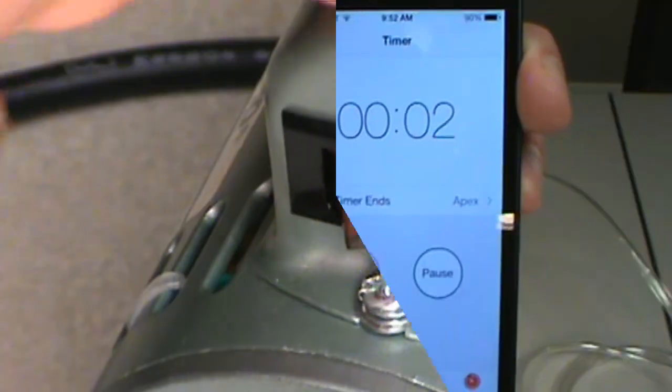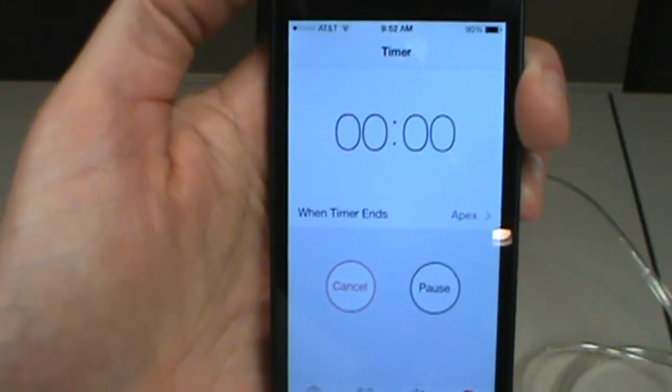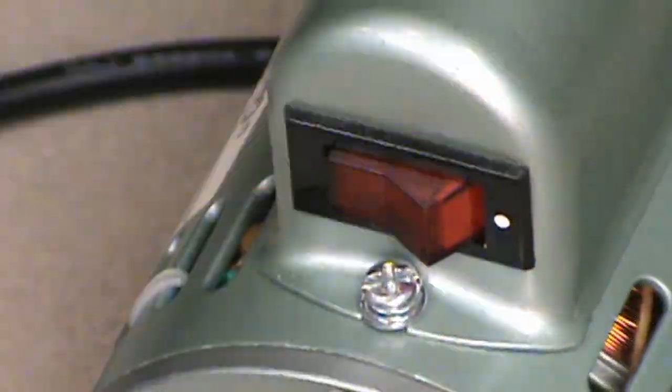Set your timer to two minutes, start it, and switch on your vacuum pump. Once time is up, turn off the pump and remove the cartridge from the hose. Remember to replace the caps on both the top and back of the cartridge.